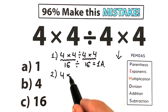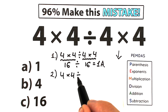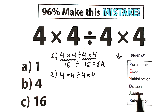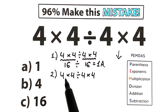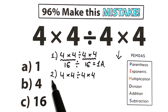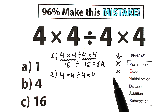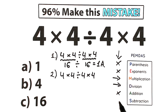How do we solve this challenge according to PAMDAS? First, we scan what elements we have. We have only multiplication and division — no parentheses, no exponents, no addition, no subtraction. So we skip parentheses, skip exponents, and work only with the multiplication-division group.